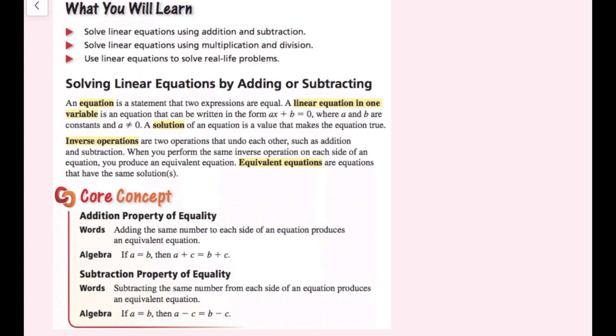So just as a review, an equation is a statement that two expressions are equal. A linear equation in one variable is an equation that can be written in the form of AX plus B equals zero, where A and B are constants, and A does not equal zero. A solution of that equation is a value that makes the equation true.